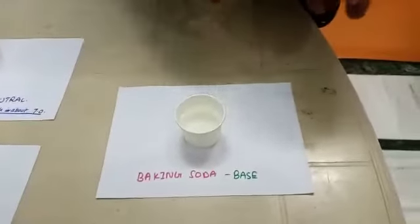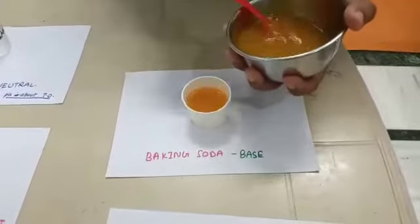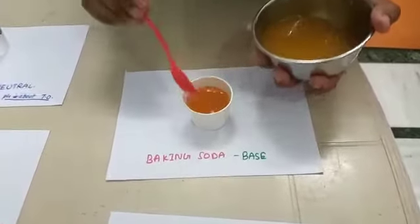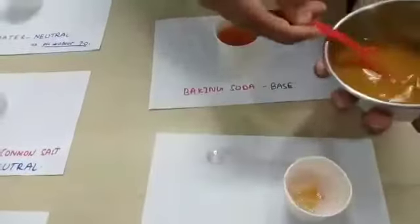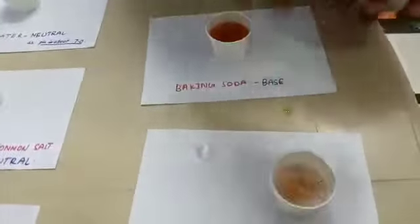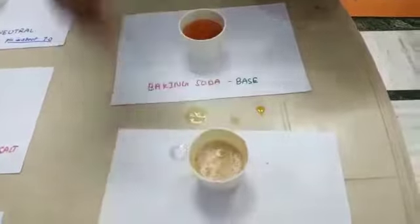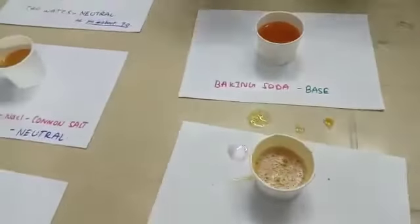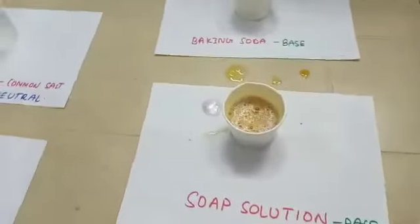Now when coming to base — sodium baking soda. It changes its color to dark brownish yellow. This is sodium baking soda, and this is soap solution. They are base in nature.